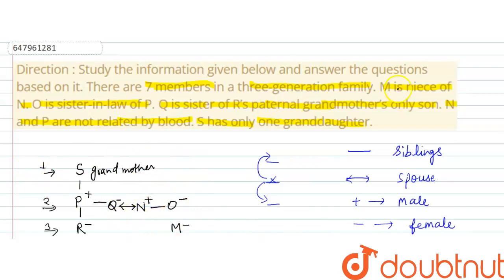Let's check. M is niece of N. M is daughter of O. M is niece of N, correct.